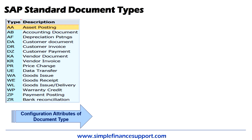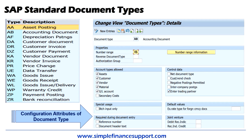Let us look at the attributes of a document type. Here on the screen you can clearly see document type AB has many attributes which will control your document posting — for example, whether you can use this particular document type to post asset documents, customer documents, vendor documents, as well as material, GL account, and so on.